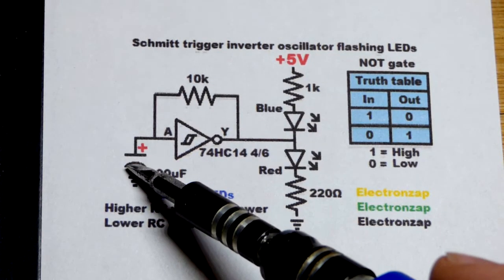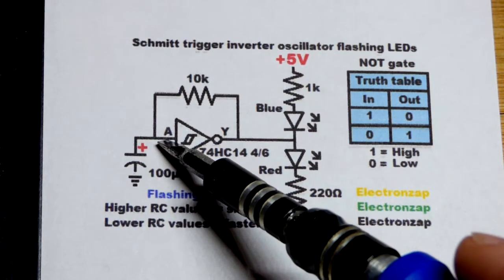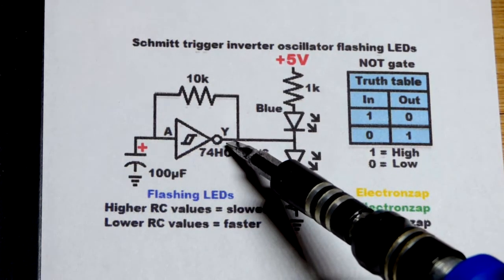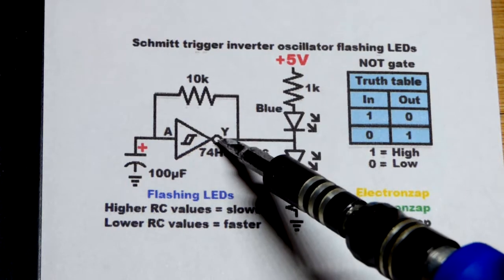Once the voltage rises far enough, then we'll have a high input. That will turn the output low. It'll connect the ground as good as it can, and it will discharge the capacitor.